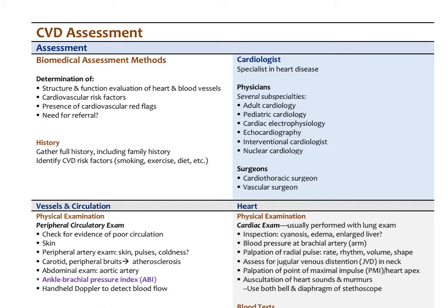If you're not a primary care physician, that leads to primary care. And if you're primary care, maybe you need to refer to a specialist. One of our major tools is history. For cardiovascular disease, we get a full history including family history of any known cardiovascular disease, and then identify all the important cardiovascular disease risk factors like tobacco smoking, lack of exercise, diet, and so forth.